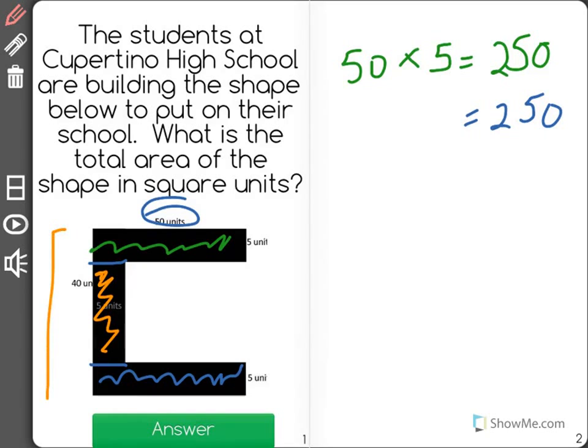We just know that this total length is 40. We don't know what the little length is, but we can figure it out because we know this part is 5, and we know this part is 5, and the whole thing is 40, so the middle part must be 40 minus 5 minus 5, which is 30.